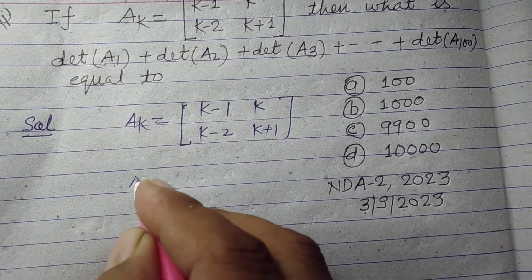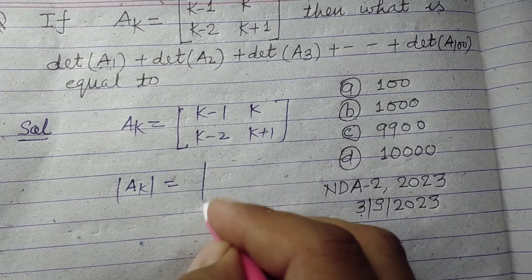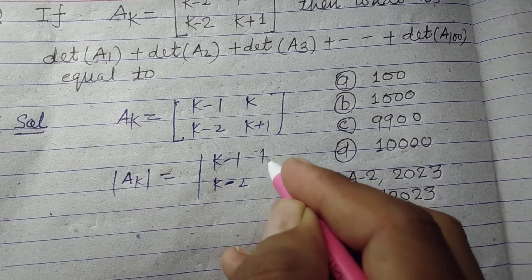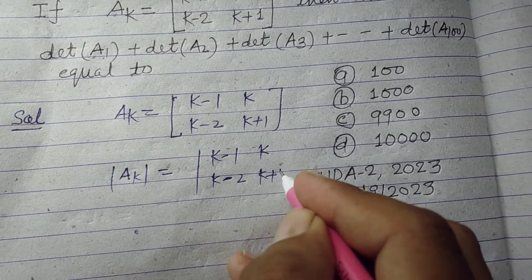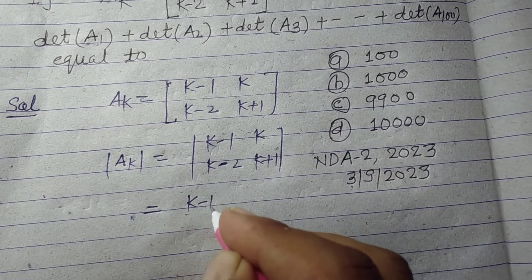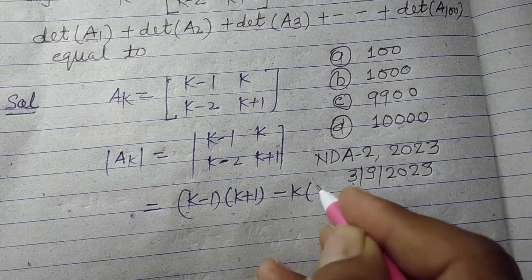So first we find the determinant of Ak. This will be (k-1)(k+1) minus k(k-2). This is a+b, a-b formula, so k² - 1 minus k² + 2k.